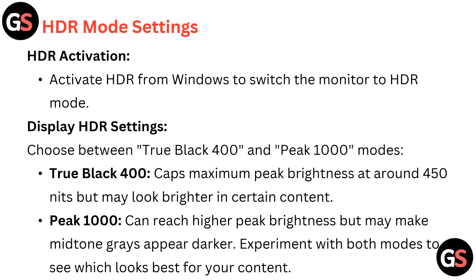For HDR Mode, activate HDR from Windows to switch the monitor to HDR mode. In Display HDR Settings, choose between True Black 400 and Peak 1000 modes. True Black 400 caps maximum peak brightness at around 450 nits but may look brighter in certain content. Peak 1000 can reach higher peak brightness but may make mid-tone grey appear darker. Experiment with both modes to see which looks best for your content.